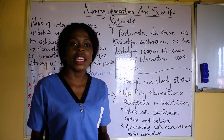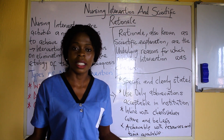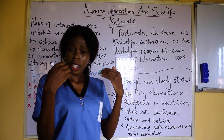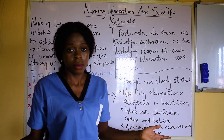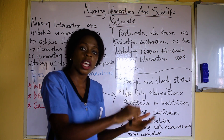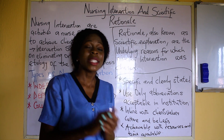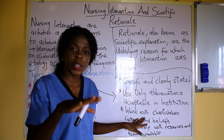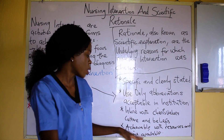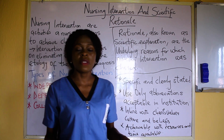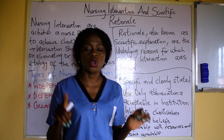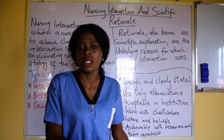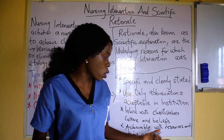Your nursing intervention should also be in line with the client's values, culture, and beliefs. For example, when treating for anxiety and told to invite a clergyman, you can't specify a priest or an imam — it's better to write 'invite a spiritual leader,' because the patient you're treating might be Muslim or Christian. In an exam, write 'invite a clergy' since the religion is unspecified. Also, interventions should be achievable with resources and time available. For instance, don't write 'check the SpO2' if there is no pulse oximeter in the ward.